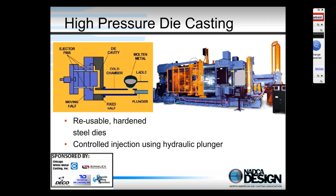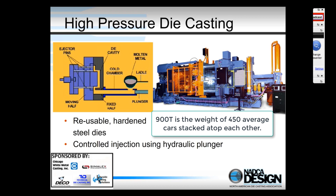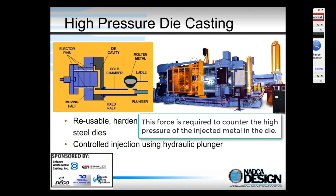When we talk about die casting, we're talking about castings produced in a die casting machine — a large, complicated, hydraulically and electrically controlled machine. We use high pressure to force liquid metal at high speeds into reusable steel molds. The picture shown is a Buhler Prince die casting machine, approximately a 900-ton machine. The 900 tons refers to the clamping capacity — the force applied to the steel dies to keep them clamped closed during injection.